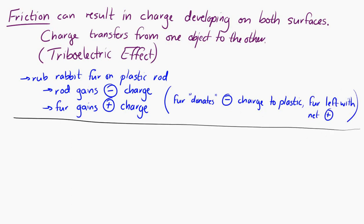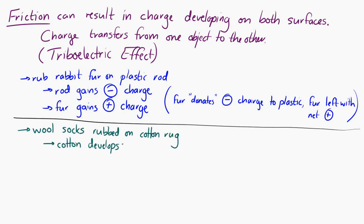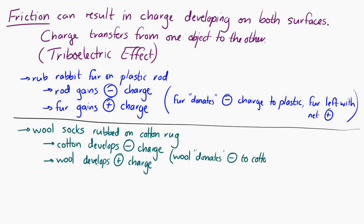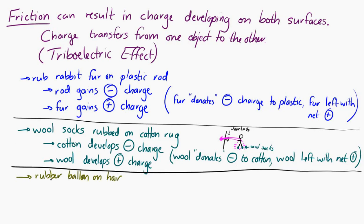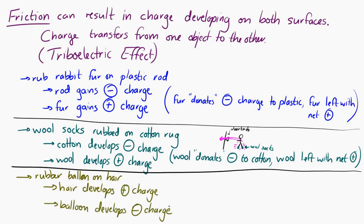Another example is if you have wool socks and rub them on a cotton rug — the cotton develops a net negative charge and the wool a net positive charge, as negative charge from the wool is donated to the cotton. If you then walk over to a doorknob wearing those socks, the net charge transfers to the conducting doorknob and you feel a shock. Similarly, rubbing a rubber balloon on someone's hair gives the hair a positive charge and the balloon a negative charge.